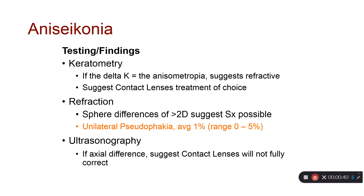Anisoconia can be tested in a number of different ways. One important consideration is what kind of anisoconia or anisometropia it is — is it axial in nature or refractive in nature? That will change our treatment strategies. Some common test findings include keratometry or corneal topography values. If there's a difference between the keratometry values, sometimes referred to as delta K, this suggests a refractive anisometropia rather than an axial length anisometropia.